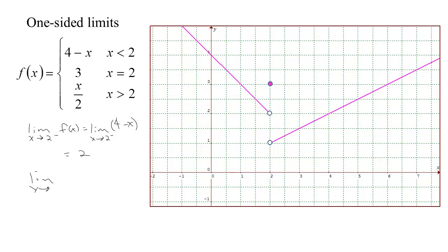If we look at the limit as x tends to 2 from above, so x is always 2 plus a bit, then since x is greater than 2 we use the piece x over 2. So we're taking the limit as x tends to 2 from above of x over 2. As x gets closer and closer to 2, x over 2 gets closer and closer to 1. So we were able to obtain the limits using the expression that defines the function rather than looking at the graph. Both ways work.